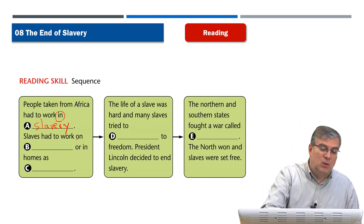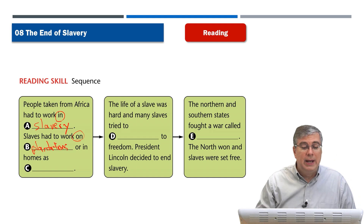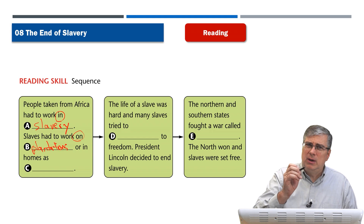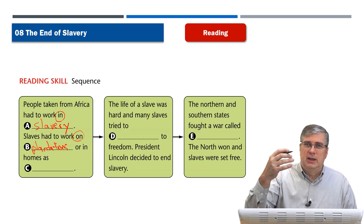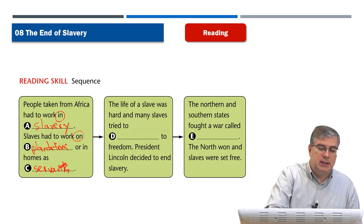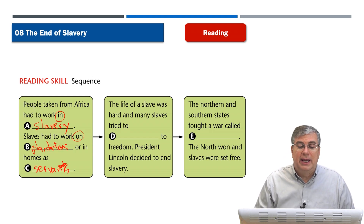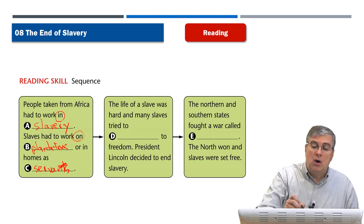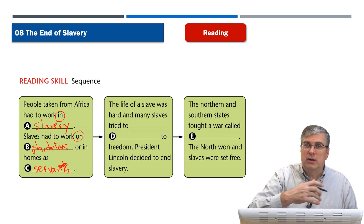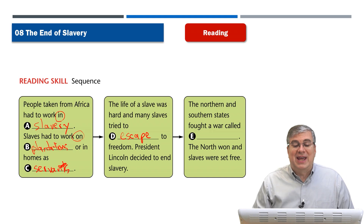Slaves had to work on plantations, or in homes as servants. The life of a slave was hard, and many slaves tried to escape to freedom. What's another word for run away? Escape. And President Lincoln decided to end slavery. The first box tells us the condition — where people came from; the middle box describes the situation over the years; and the last box tells us about the end of slavery.